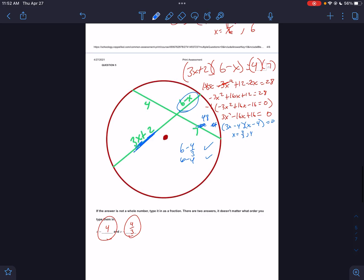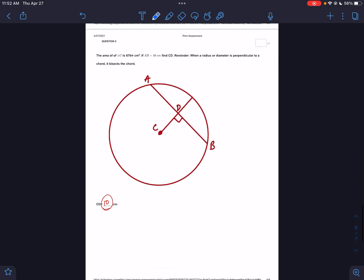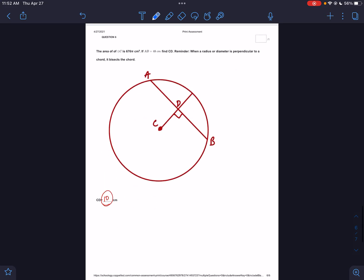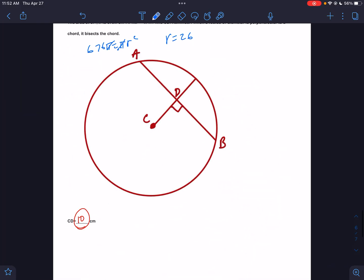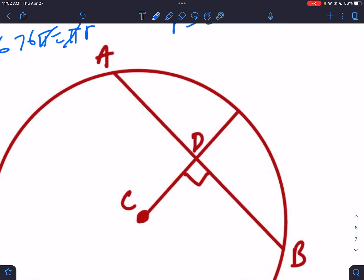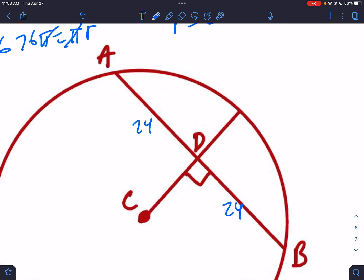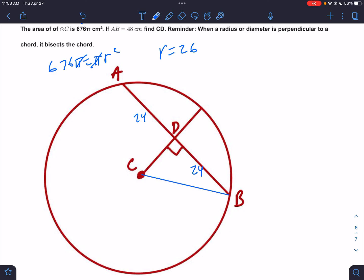The area of the circle is 676π. Let's get going: that would be πr². So 676π = πr². The π's cancel out, so the square root of 676—I think it's 26. Yep. So the radius is 26. If AB is 48, let's look at the picture.